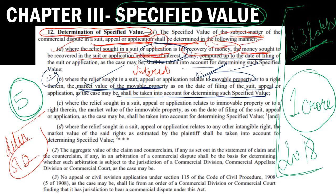Number 3: where a suit, application, or appeal is related to immovable property, or you are establishing a right over it, similarly — just as we saw for movable property — the market value on the date of filing the suit, appeal, or application will be considered.